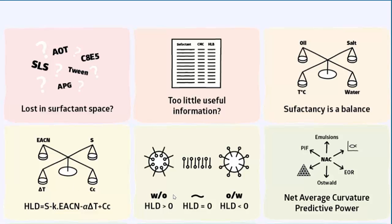What does it mean? Well, when HLD equals zero, you have a balanced system — a type 3 microemulsion phase. When HLD is greater than zero, then you have a water and oil phase. When it's less than zero, you have the typical oil and water emulsion. So you can see that you can tune the whole system the way you want. You can change the surfactant knowing CC to tip the balance in the direction you want.